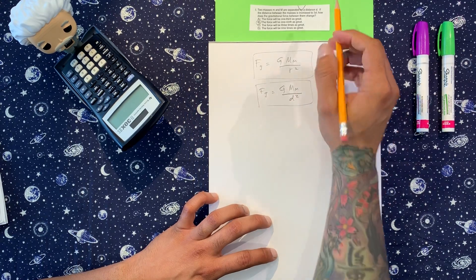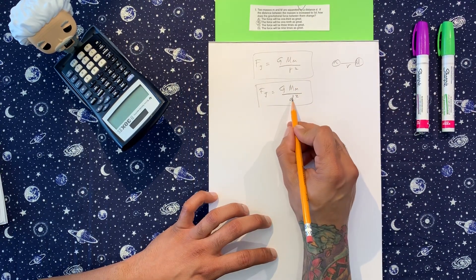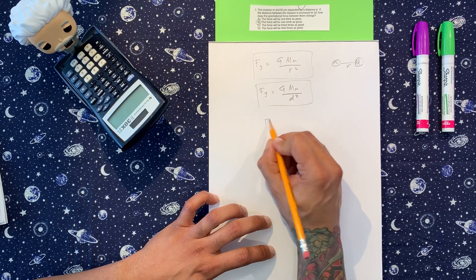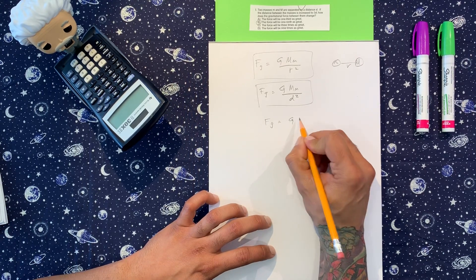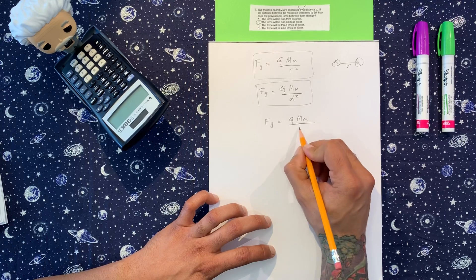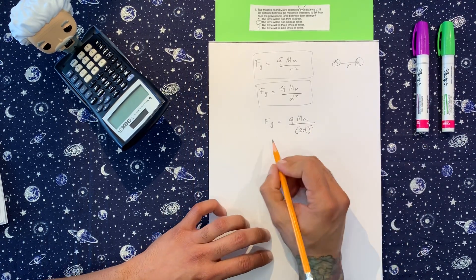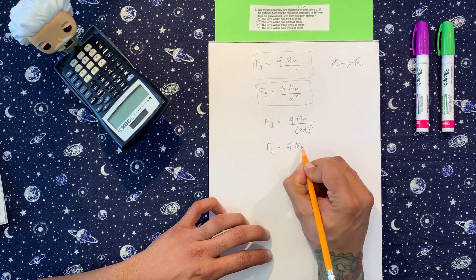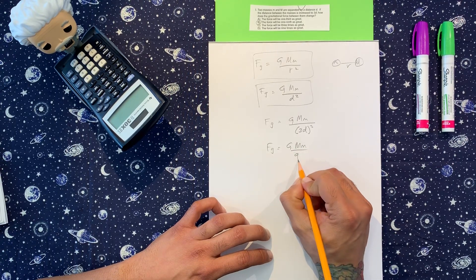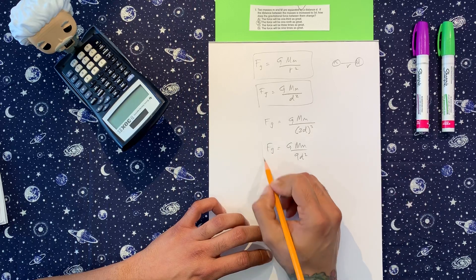Now it says we increased to 3d. So here in the bottom, let's increase it by 3d and see what happens. We're going to have the same thing, but down here now we're going to have 3d squared. So we're going to get on the bottom 9d squared. Okay, so let's stop here.